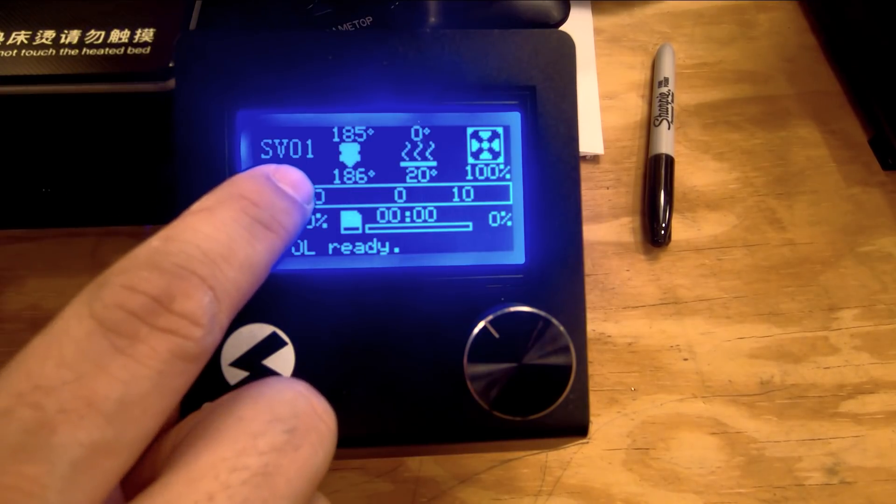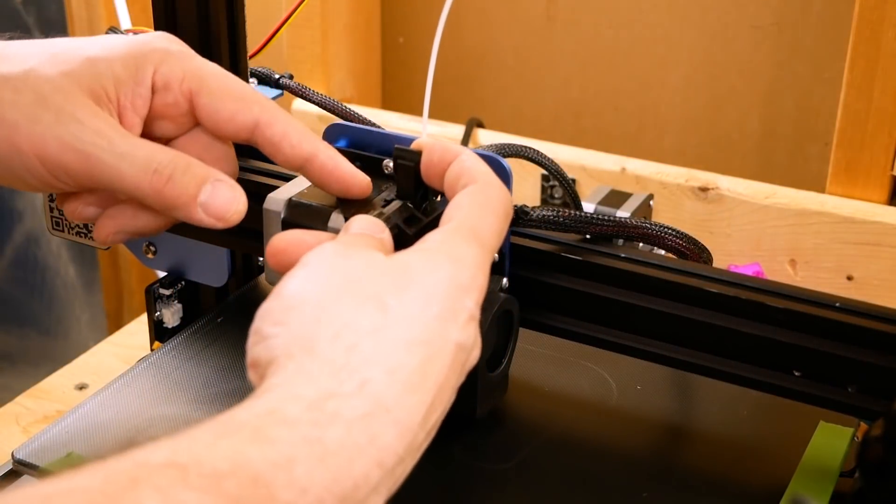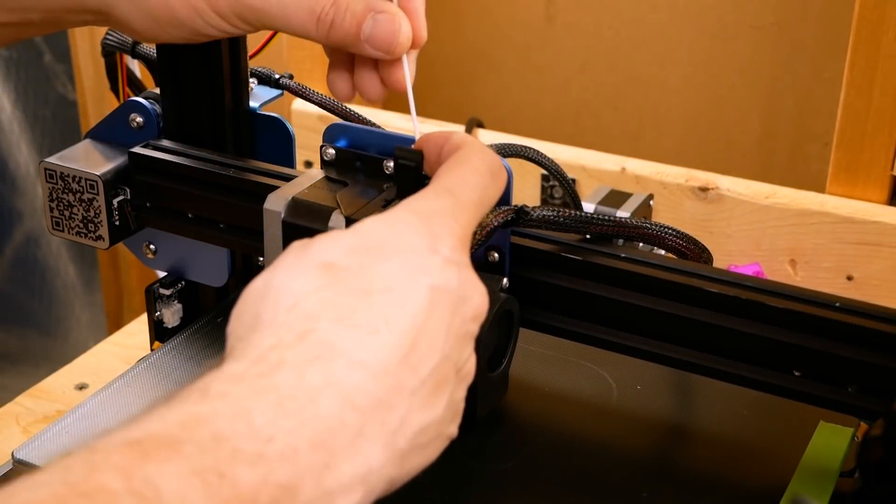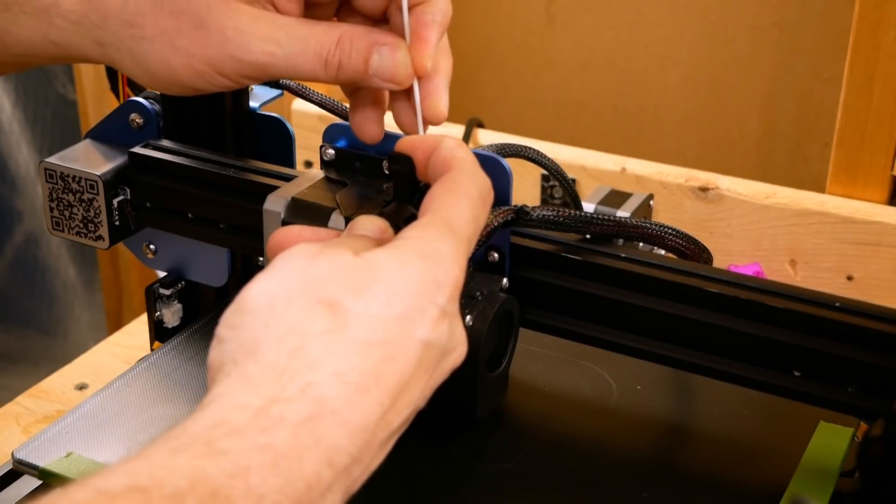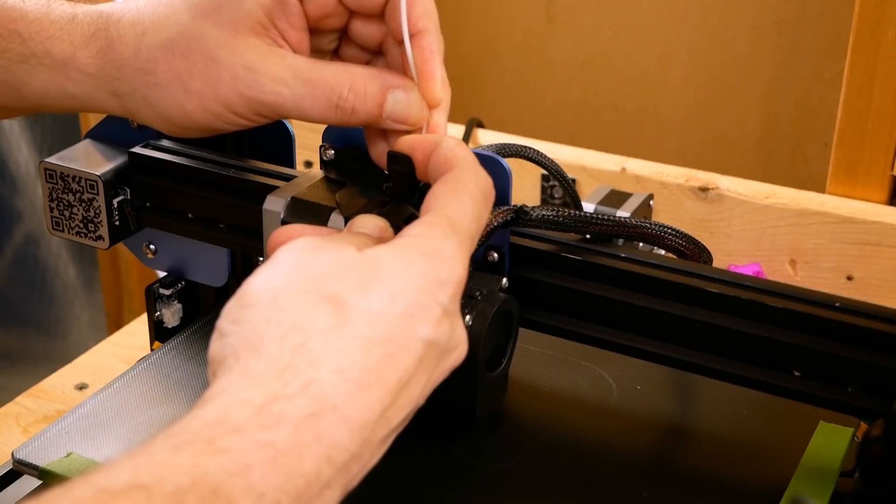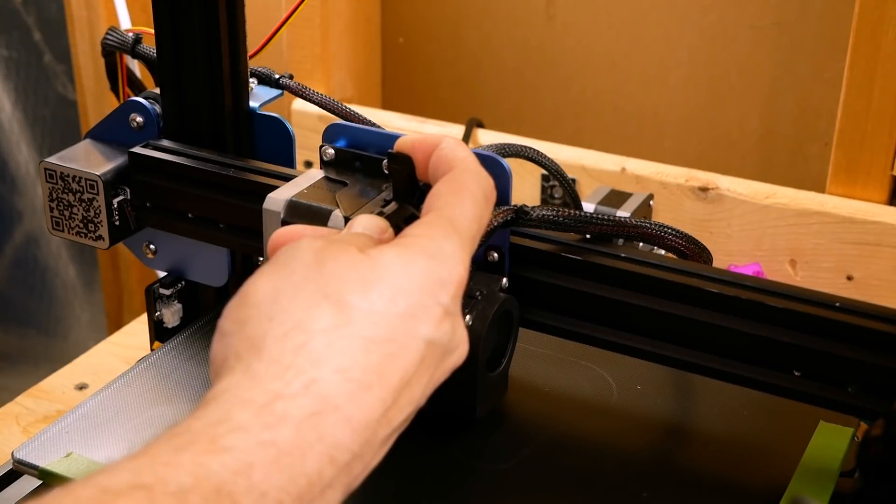Once the nozzle comes up to temperature, I'm going to pull on this lever to release the spring tension on the extruder drive gear, and I'm going to push a little bit of filament in so that it comes out the nozzle and then quickly draw it out.